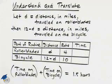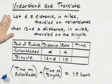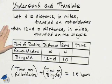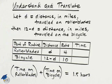The first step to solving this problem is to understand and translate. I'm going to let D equal the distance in miles traveled on rollerblades. Then 12 minus D is the distance in miles traveled on the bicycle, since the total distance traveled was 12.